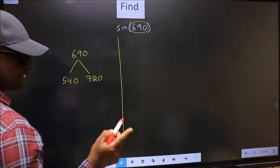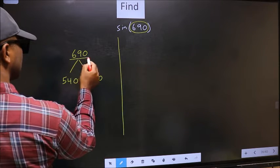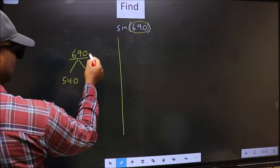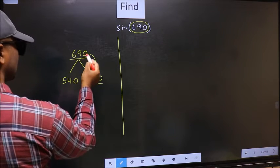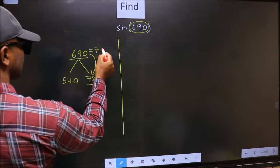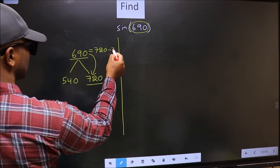Next, 690 is close to which number? This is close to 720. So 690 now should be written as 720 minus 30.